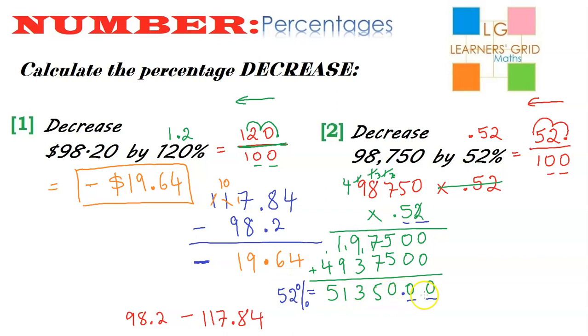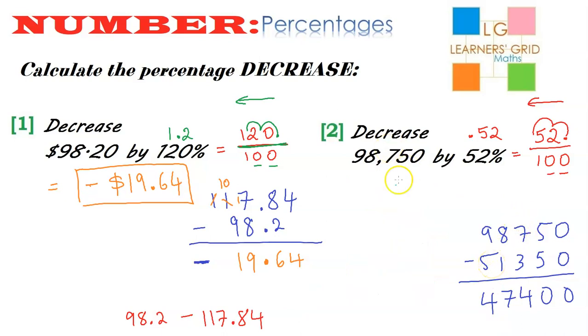This gets subtracted from the original amount. So all I have to do is 98,750. And I subtract. I'll start from the units. 0, 5, 3, 1. So let's do that. 0, 0, 4, 7, 4. So I'll just make a little bit of room. The final answer is 47,400. And that's all there is to it.